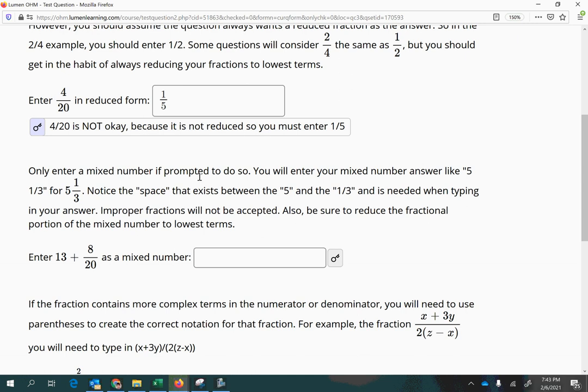All right, only enter a mixed number if prompted to do so. You will enter your mixed number answer like 5 and 1 third this way. Notice the space that exists between the 5 and the 1 third.